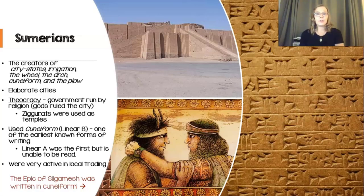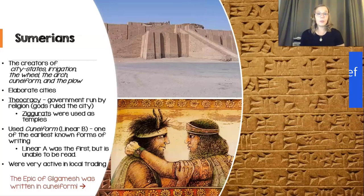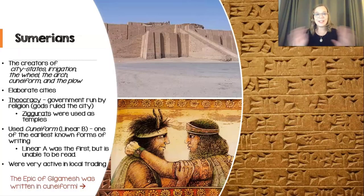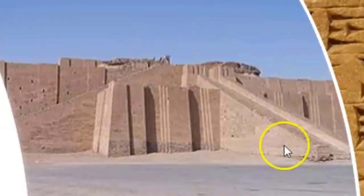Another thing that the Sumerians are known for is that they had a theocracy — a government run by a religious leader. The Sumerians believed that the gods ruled their city and their religion was a big part of their lifestyle. They were also polytheistic, so they believed in many gods. An important vocab word for the Sumerians is that they built temples called ziggurats, which is what you see in the top picture. A ziggurat was just a temple.